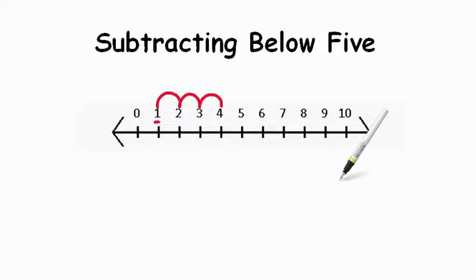Now what would our number sentence be for that? Remember, we removed 3 from it. So we start at our larger number, 4, and we're going to use our takeaway symbol, our minus symbol. We went away 3, and that equals 1. So 4 take away 3 equals 1.